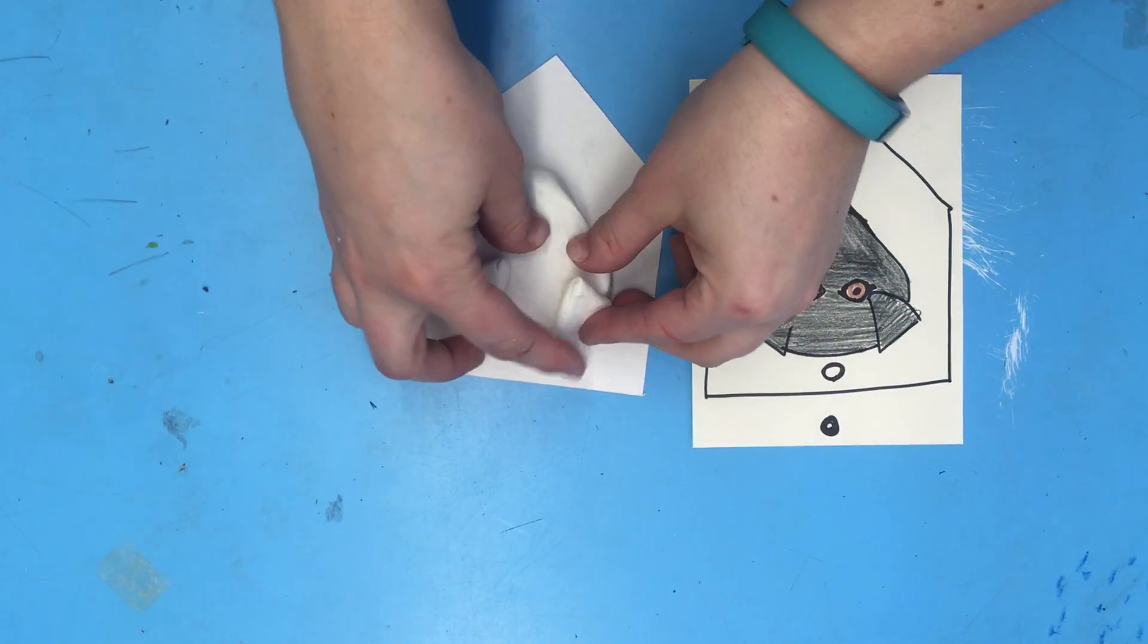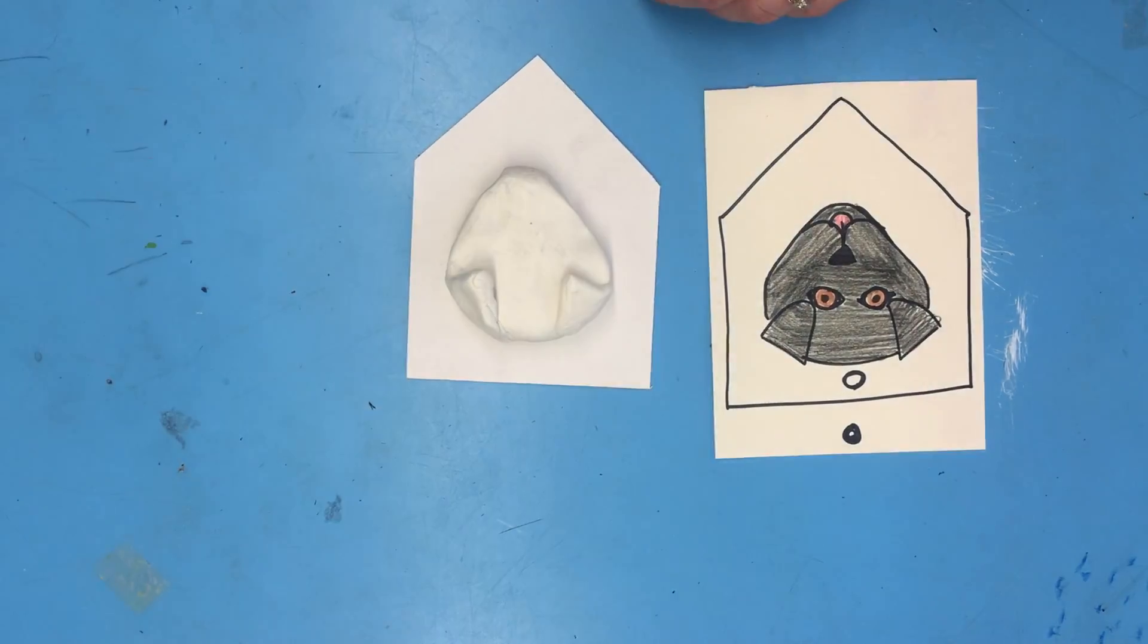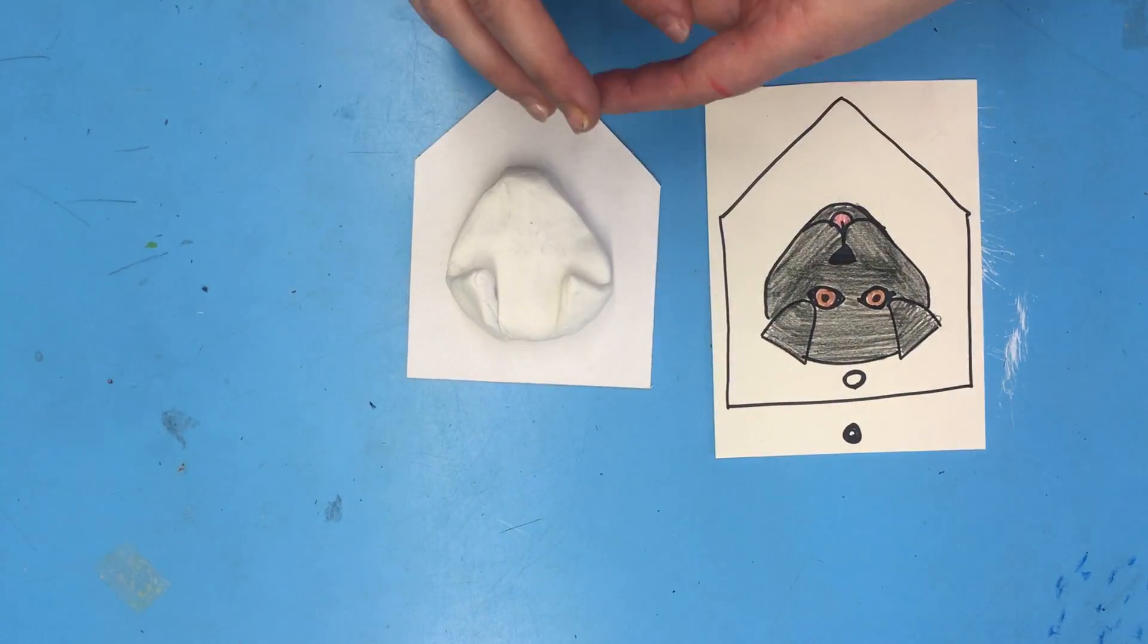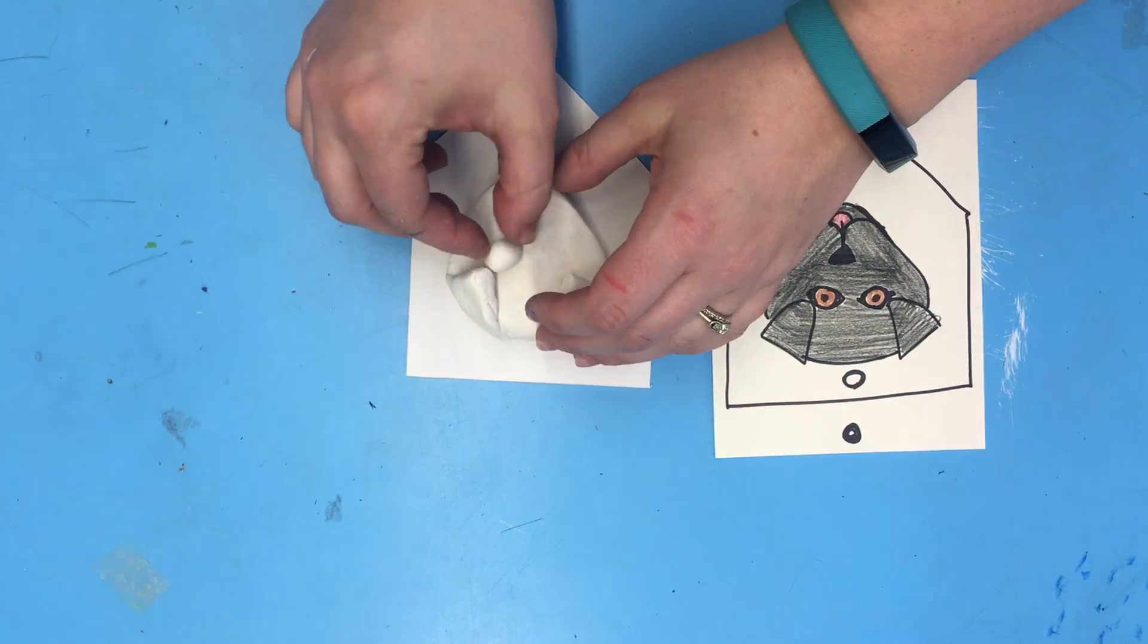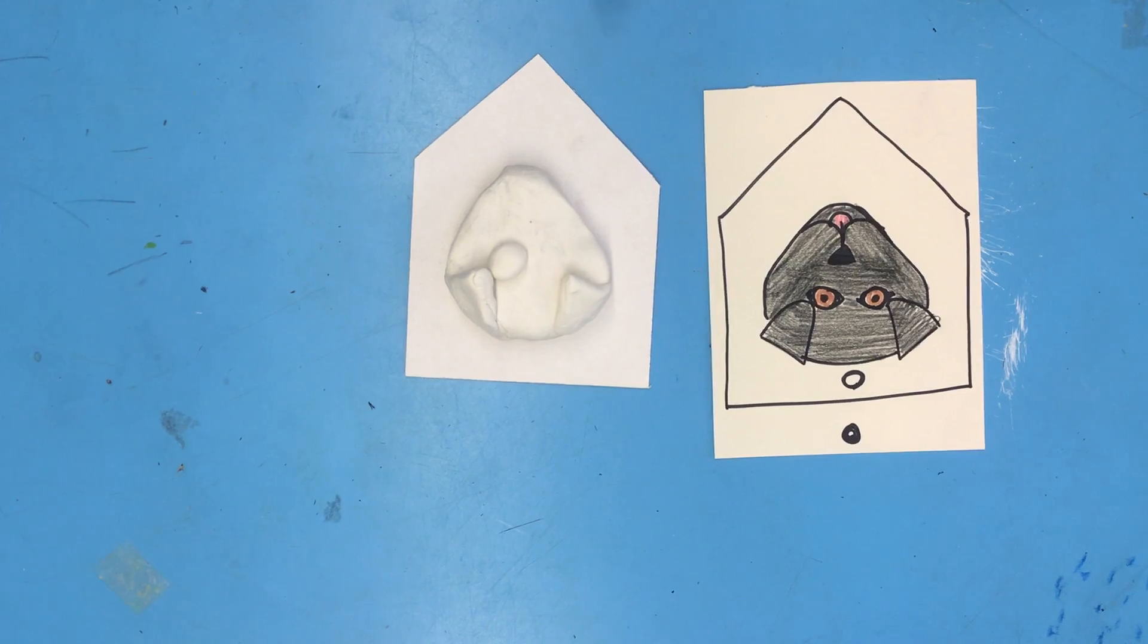I'm going to make two little ears. Two little puppy ears. And I'm going to make the eyes. So right now I'm just building the features of my animal.